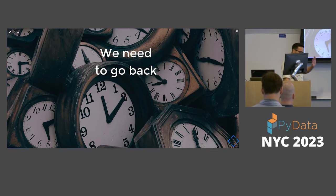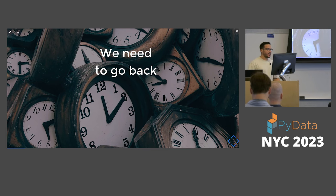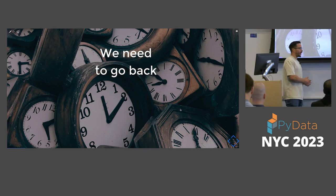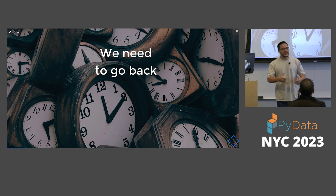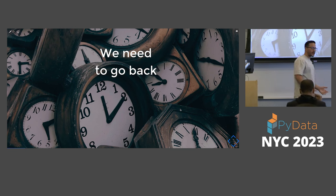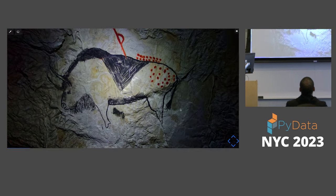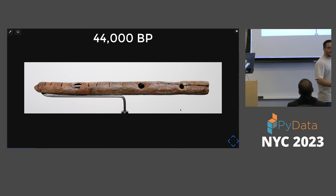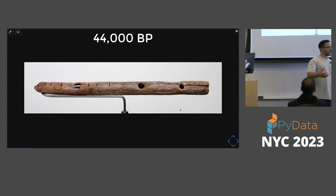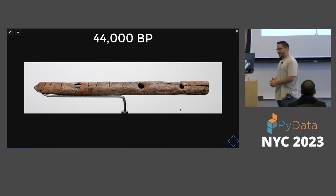Before we get started, we need to go back — way back. I wanted to add this slide because I really like how media companies like Vox always start with 'let's go back.' So I found a picture of a cave. Actually, it's not that far from reality: the first instance of music we've found was about 40,000 years ago in a cave in Germany, where they found a flute and understood that people were using it to create specific sounds.